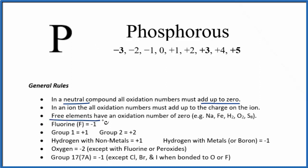In fact, we call this a free element. Free elements have an oxidation number of zero, things like Na, Fe, and even H₂, O₂, S₈, or P₄, for instance. All of those are considered free elements with oxidation number zero.